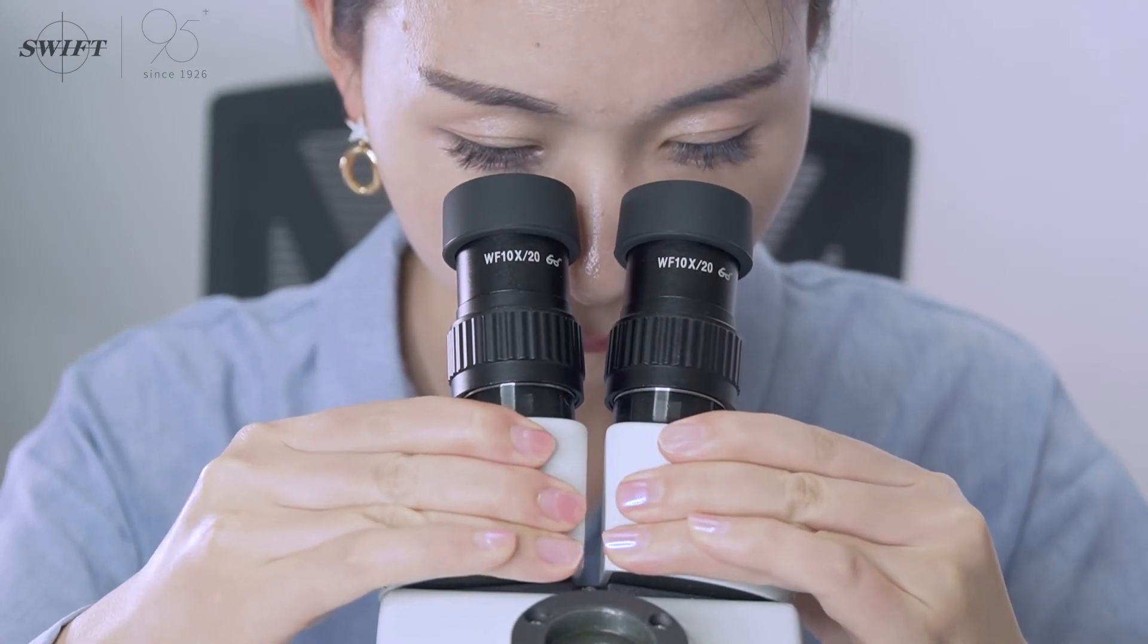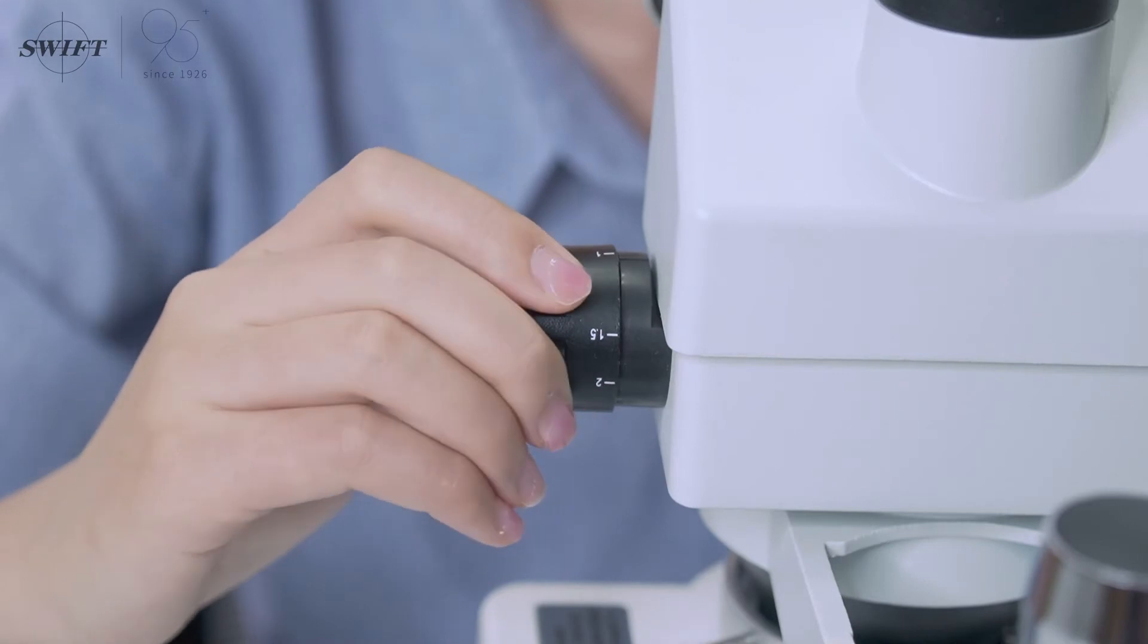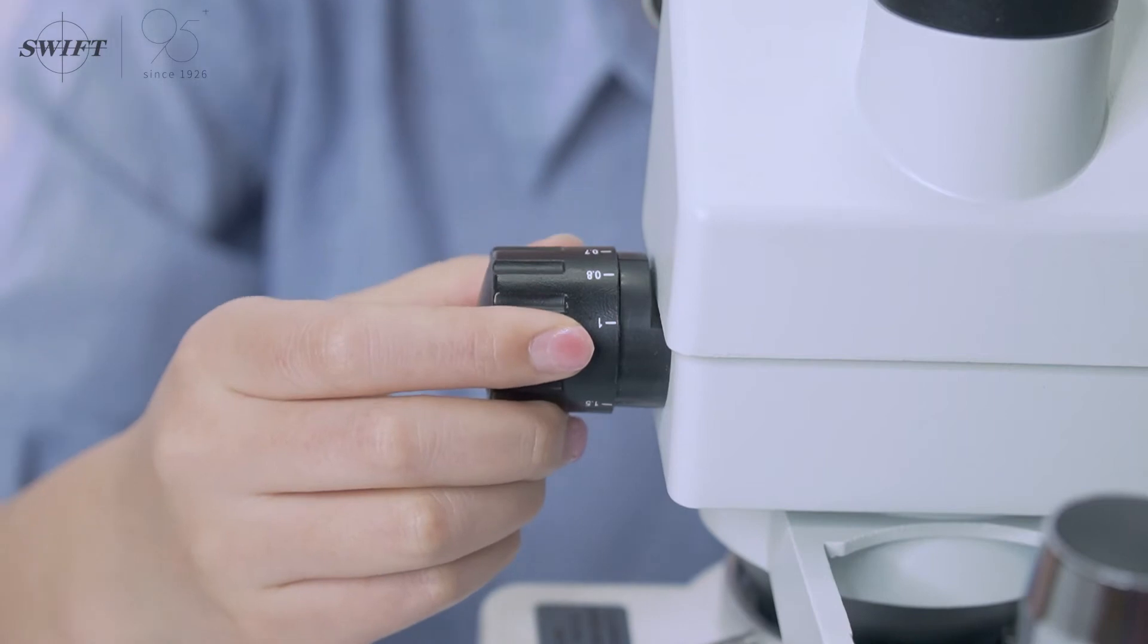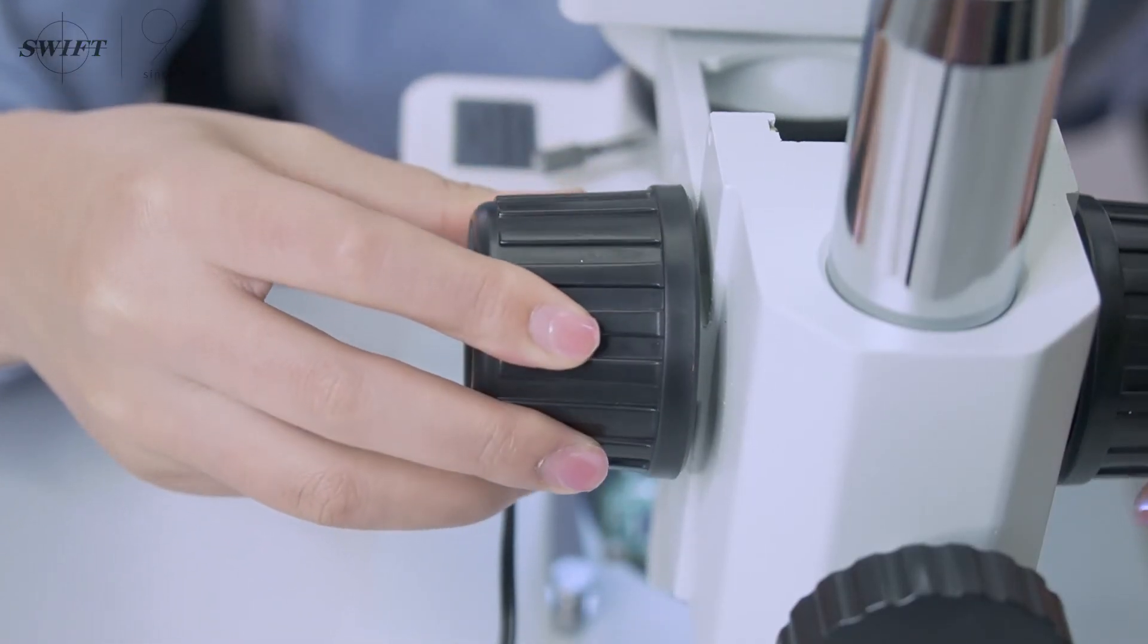Adjust the appropriate interpupillary distance for comfortable observation. Place the zoom handwheel at the low magnification position to find the image under the microscope quickly and accurately. Adjust the focus wheel to find the desired image for observation.